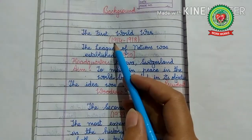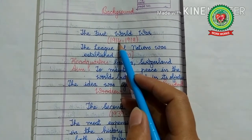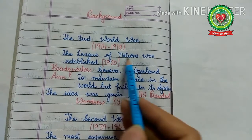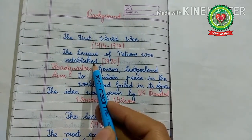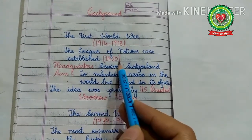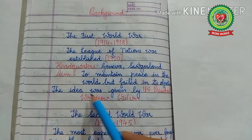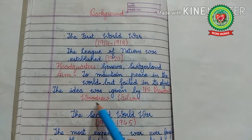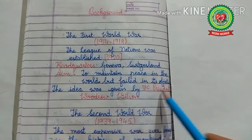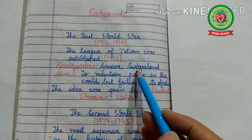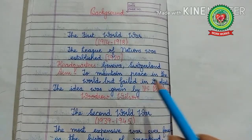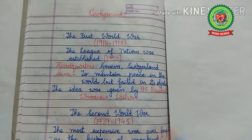The First World War started in 1914 and ended in 1918. After the First World War, the League of Nations was established — an organization formed in 1920 to maintain peace in the world. The idea was given by U.S. President Woodrow Wilson. Its headquarters were in Geneva, Switzerland. The main aim was to maintain peace, but it failed in its objectives, and hence the Second World War came.